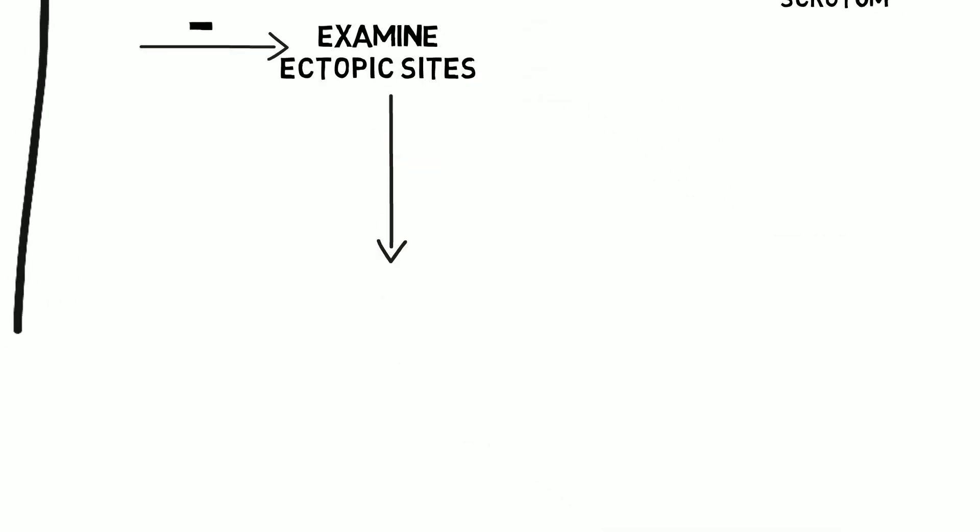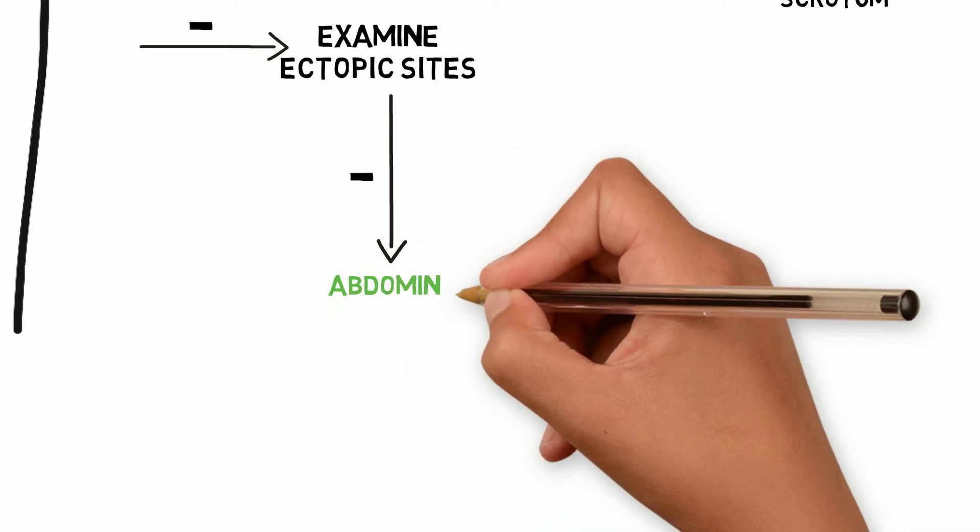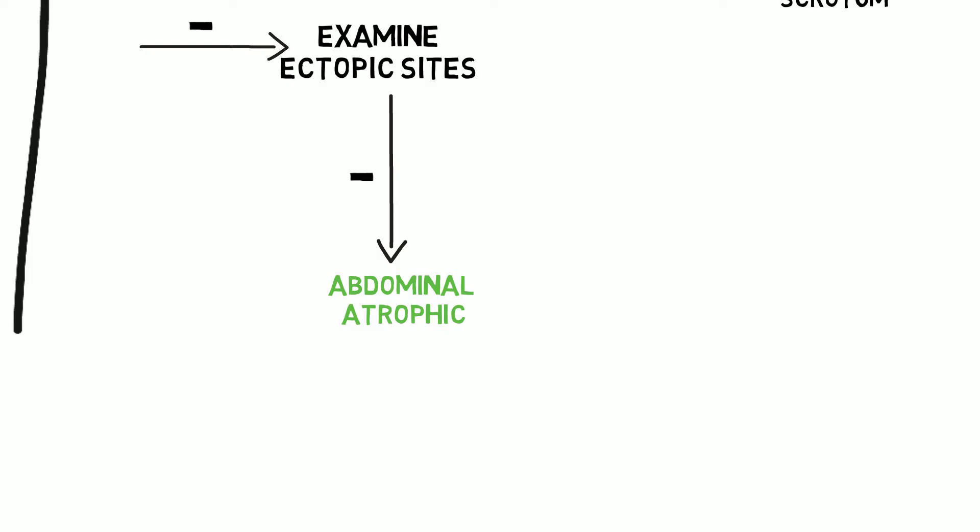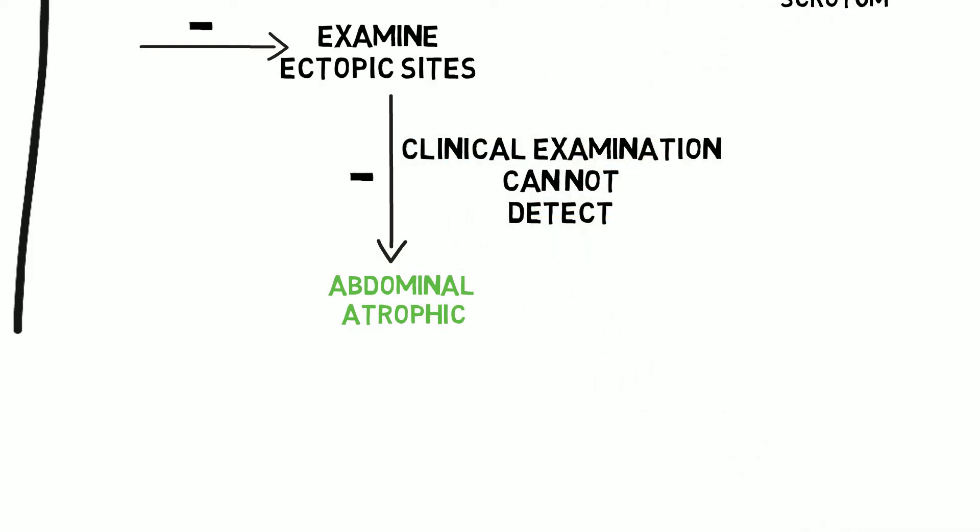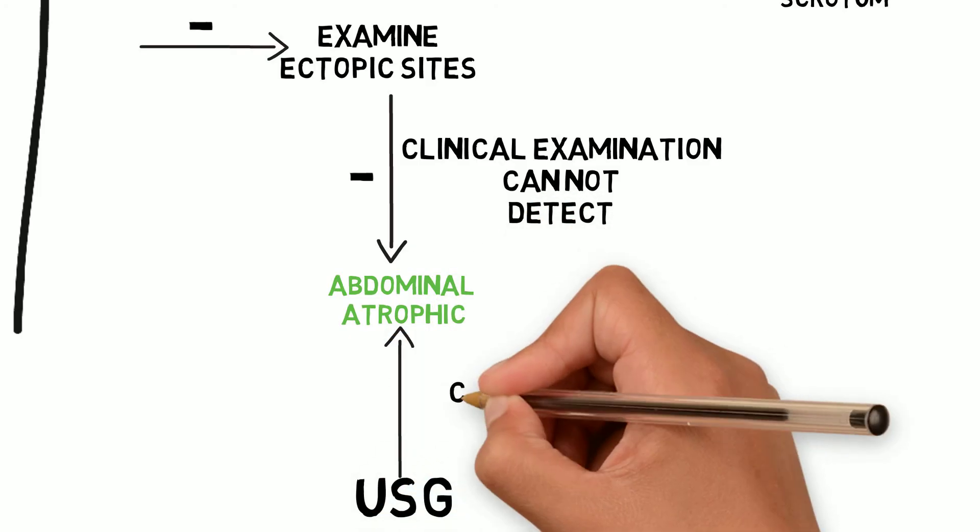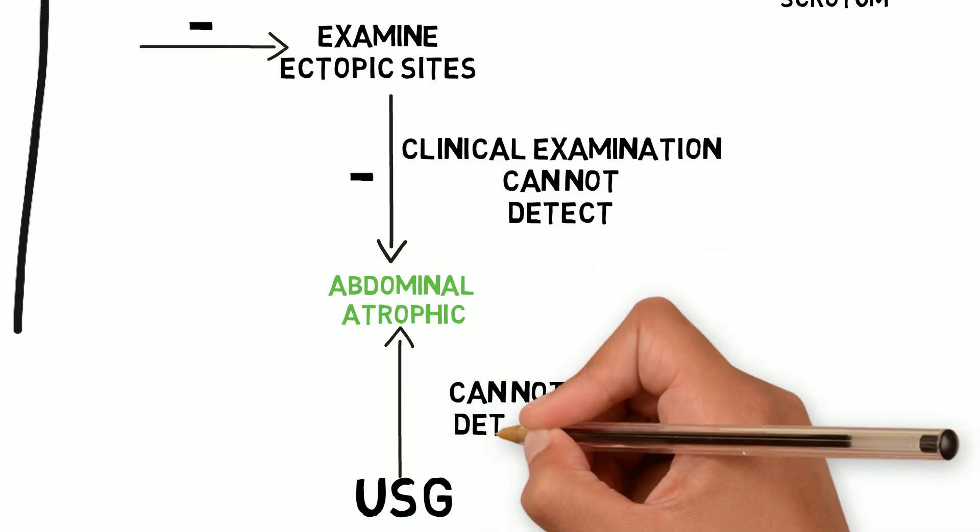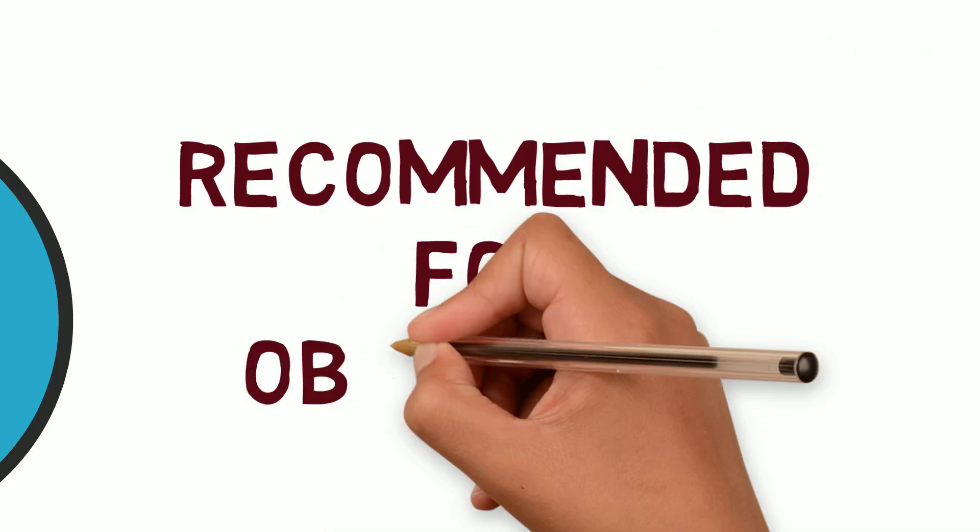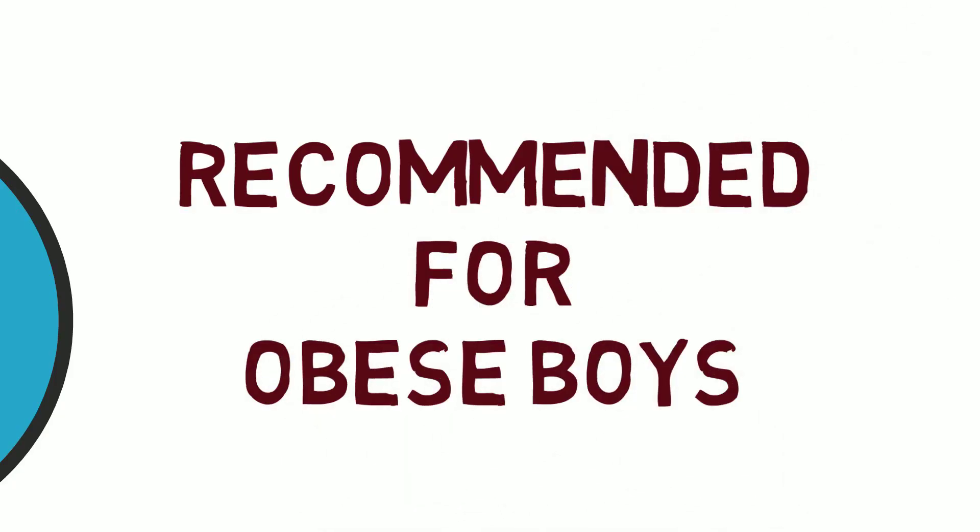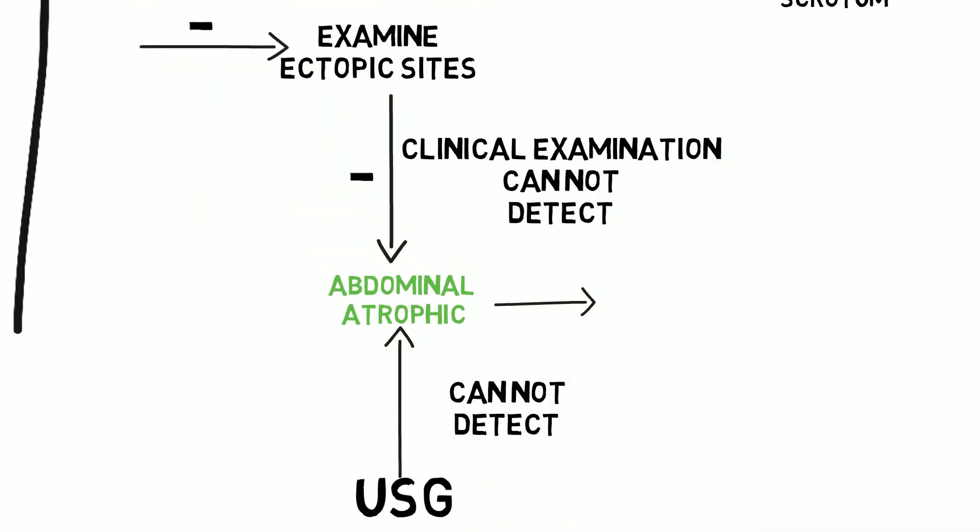If still not palpable, it could be abdominal or atrophic testis, because clinical examination cannot detect abdominal or atrophic testis. And though ultrasound is routinely done, even ultrasound cannot detect abdominal or atrophic testis. What is the role of ultrasound? It's mainly recommended for obese boys where clinical examination is difficult.